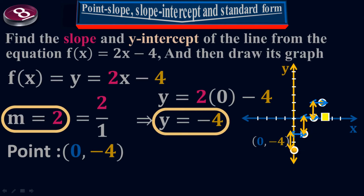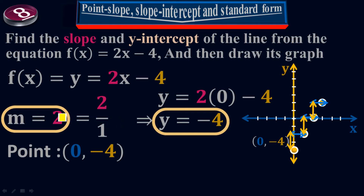For the other points, I need to know the direction of the line. Looking at the slope m equals 2, slope is rise over run — rise is the change in y and run is the change in x. So I write 2 equals 2 over 1. Starting from (0, negative 4), I go up 2 and right 1, giving my second point.